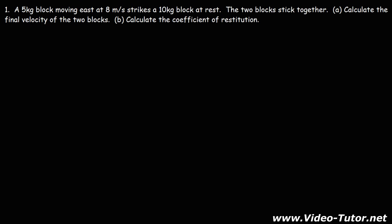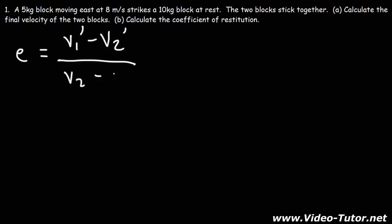Let's talk about the coefficient of restitution. The coefficient of restitution is represented by the symbol E, and it's equal to the ratio of the difference of the final velocities after the collision to the initial velocities before the collision. So it's equal to V1 prime minus V2 prime divided by V2 minus V1.